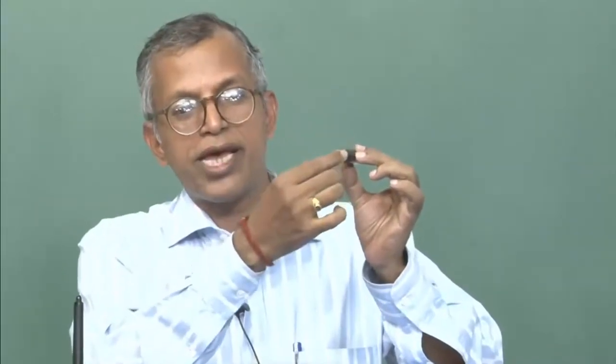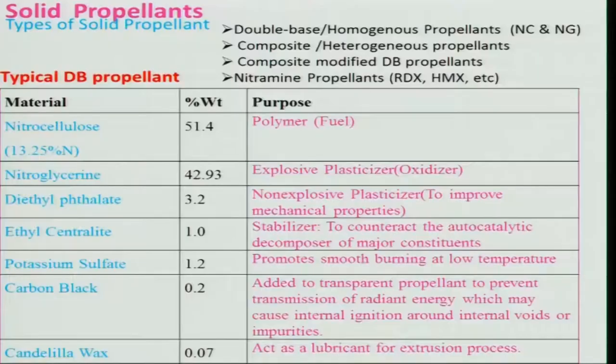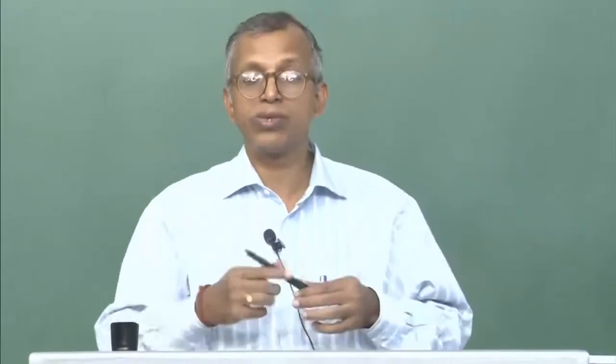This is basically a double base propellant containing nitrocellulose and nitroglycerin. It has a hole here — this surface configuration is known as a side-burning grain, which we will discuss shortly. The grain contains all constituents: fuel, oxidizer, and additives together. Candelilla wax used in very low percentage acts as a lubricant for the extrusion process — because the propellant must be extruded into various shapes, such as cylindrical or star-shaped grains.